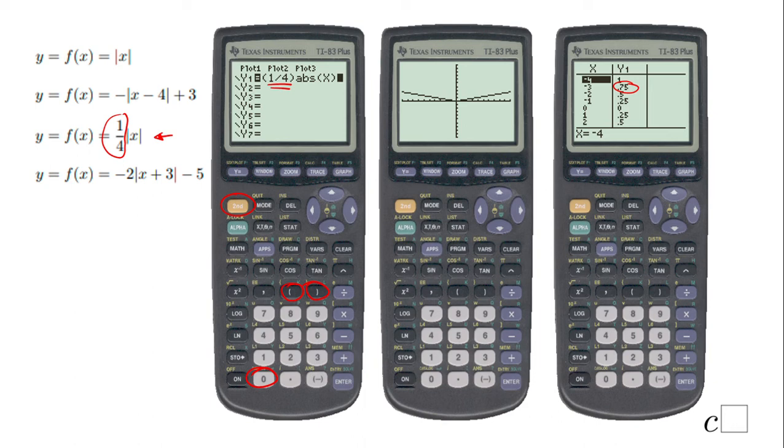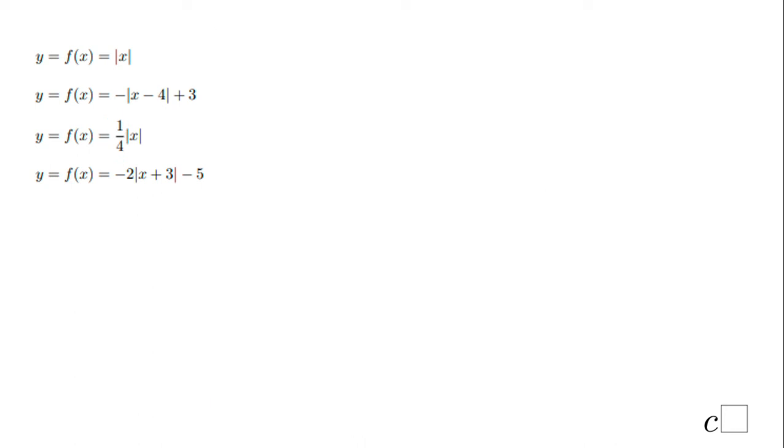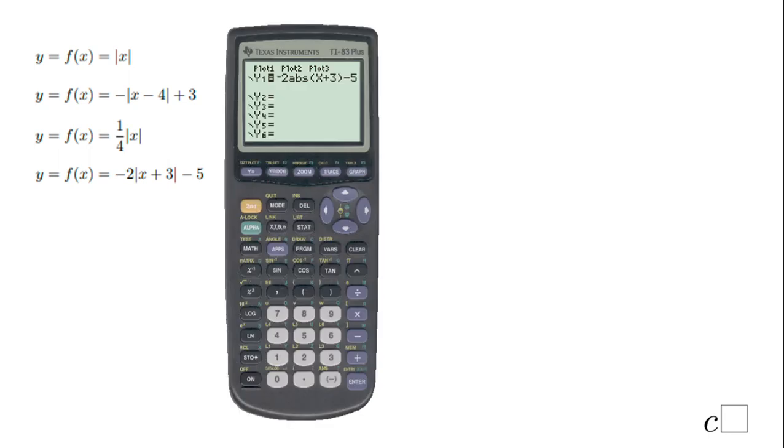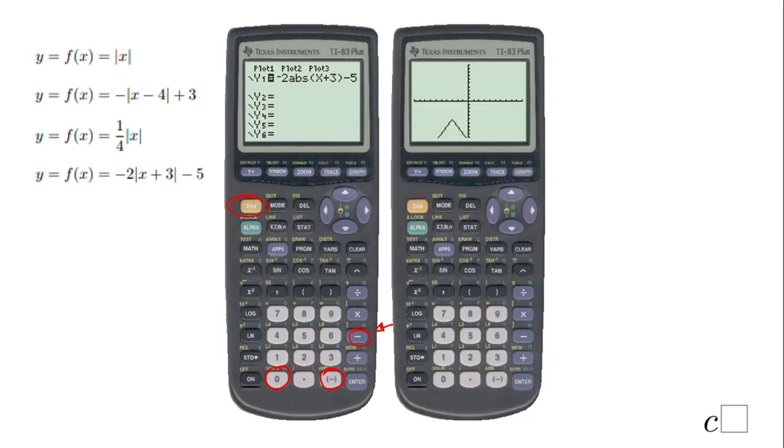The last one will be the last absolute value function, which you see how I put it in again. Remember, this is the negative; this is the minus, so be careful. You put the negative, second catalog, you have the absolute value, X plus 3. Don't forget to close the parentheses, then minus 5. You use the minus right here, and you should get something like this.